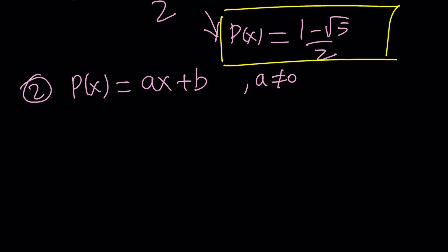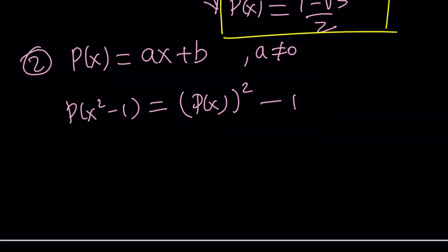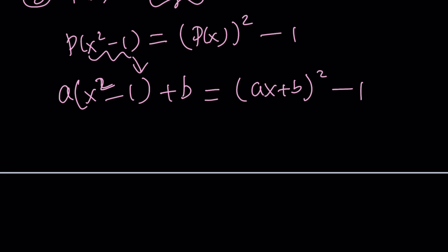Now let's go ahead and plug it into our original equation. What does the original problem give us? p of x squared minus 1 equals p of x squared minus 1. So now I'm going to go ahead and plug in this for p of x, which is going to give me a times x squared minus 1, and then plus b. And then p of x is ax plus b. I need to square it and subtract 1. So can we solve for a and b from this equation? Looks like it's solvable, but let's give it a try.